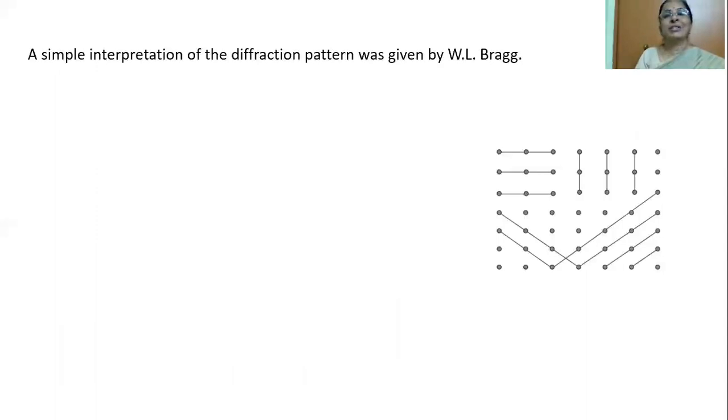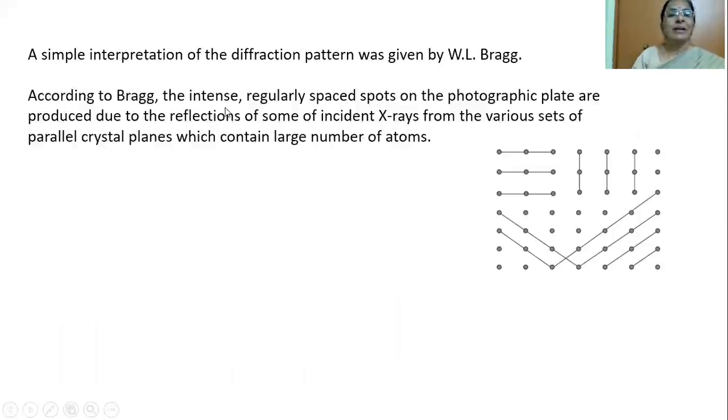A simple interpretation of the diffraction pattern was given by W. L. Bragg. According to Bragg, the intense, regularly spaced spots on the photographic plate are produced due to the reflections of some of the incident X-rays from the various sets of parallel crystal planes which contain large number of atoms. Here I have shown a two-dimensional crystal but you can imagine a three-dimensional crystal. You can imagine some planes. Suppose if you take a plane in three-dimensional space, this plane consists of very few atoms. You can imagine the plane in a vertical direction. You can imagine a plane in the crystal in the horizontal direction. Or you can imagine a plane in the inclined plane also.